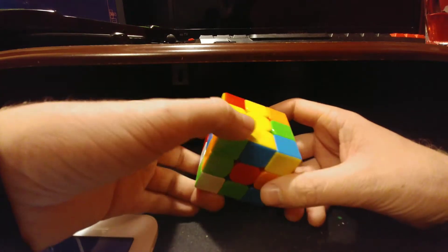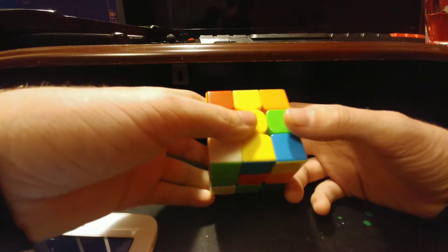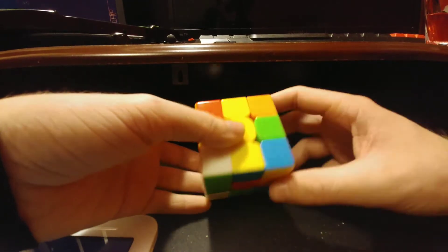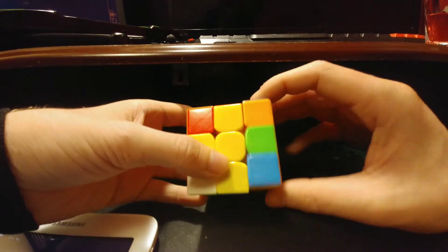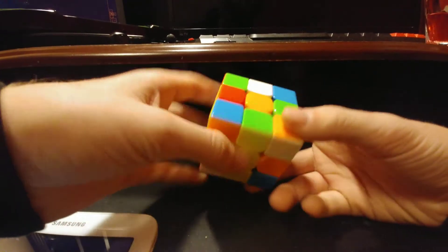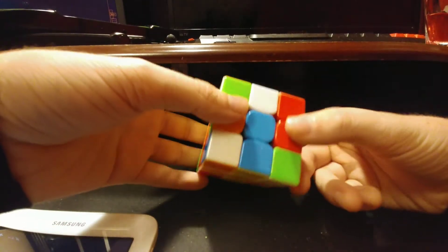For green we can just lift that up, put it where it goes, and bring red over. Boom, cross is done. That was pretty easy.